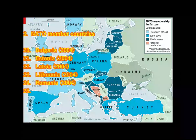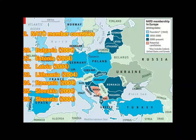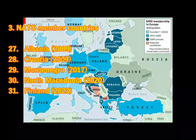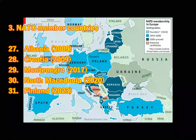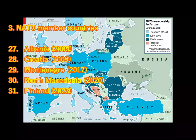Bulgaria, Estonia, Latvia, Lithuania, Romania, Slovakia, and Slovenia joined in 2004. Albania and Croatia joined in 2009. Montenegro joined in 2017. North Macedonia joined in 2020. And Finland, the latest member, joined in 2023.